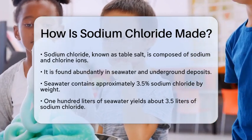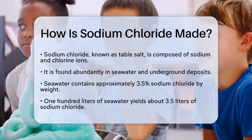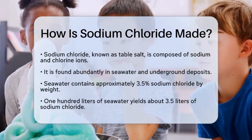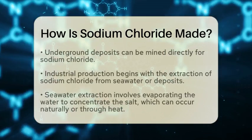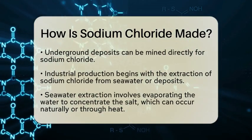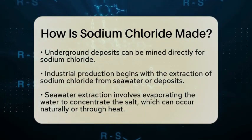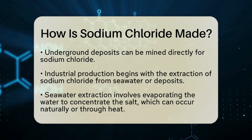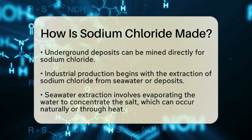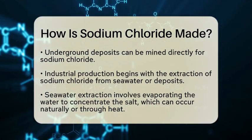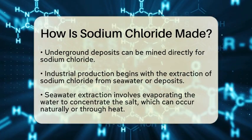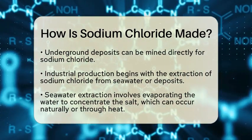When it comes to industrial production, the process typically starts with extraction. Sodium chloride is taken from either seawater or underground deposits. If seawater is used, the water is evaporated to concentrate the salt. This evaporation can happen naturally through sunlight or can be accelerated using heat.